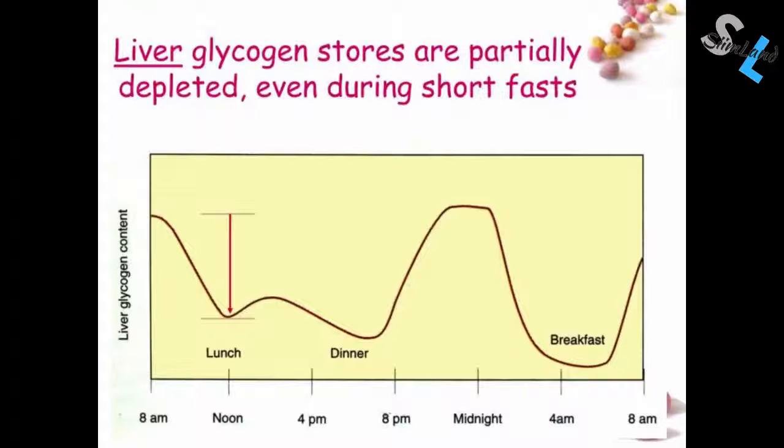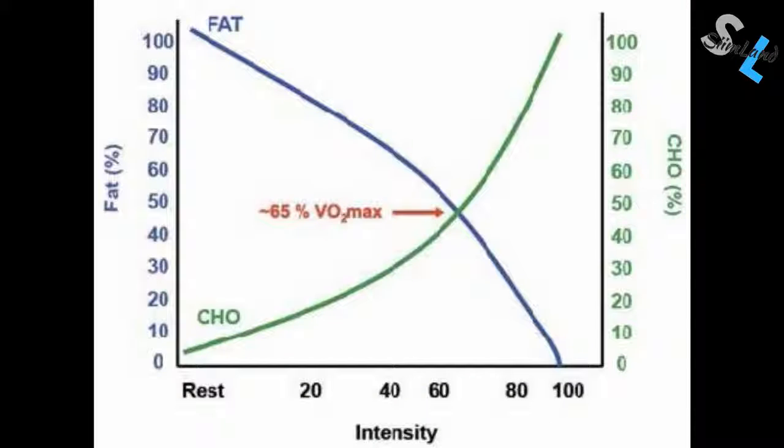Liver glycogen depletion occurs just by mere virtue of staying awake, as it constantly transmissions energy through the brain and other vital organs. Muscle glycogen gets tapped into only if you exceed 65% of your VO2 max, and therefore switch over from burning fat into burning glycogen.